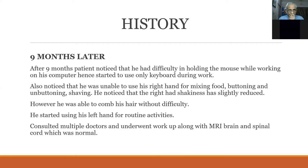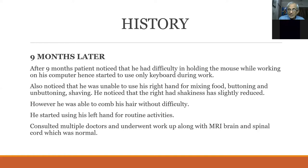Nine months later, the patient noticed difficulty holding the mouse while working on the computer and started using only the keyboard. He was also unable to use his right hand for mixing food, buttoning, unbuttoning, and shaving. His right hand shakiness had slightly reduced. He started using his left hand for routine activities. MRI of brain and spinal cord was normal. Activities of daily living were getting slowly affected because of increased rigidity.